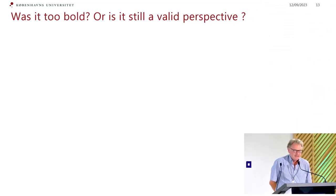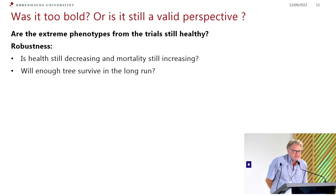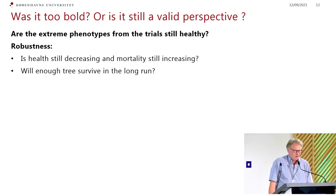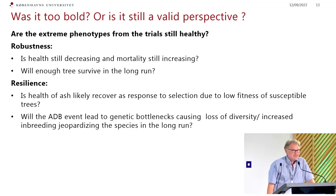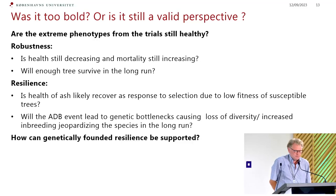That is basically what I will cover during this talk. The question is: are these extreme phenotypes we saw — are they still healthy or are they starting to show symptoms? Can we still see healthy trees in the forest, or is health still declining with increased mortality? Will there be enough trees to survive to allow ash to remain in the long run? And coming to resilience — will health recover due to selection, favoring genotypes with high tolerance? Or would strong mortality lead to bottlenecks causing loss of diversity and inbreeding? And how can we support this naturally founded resilience if it is there?